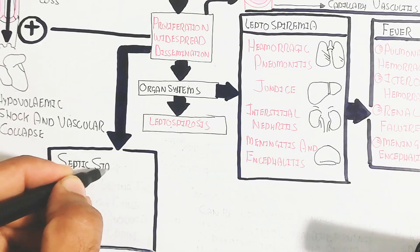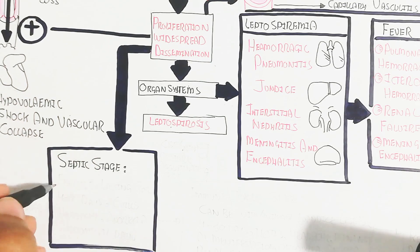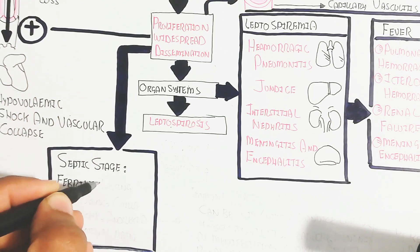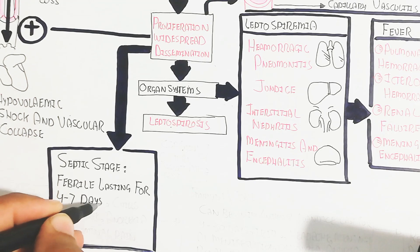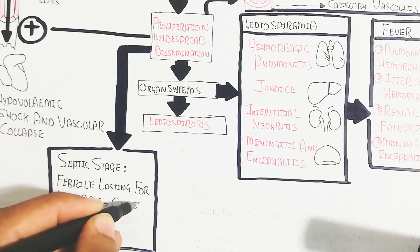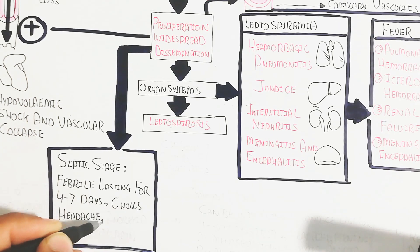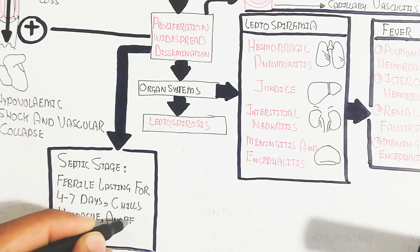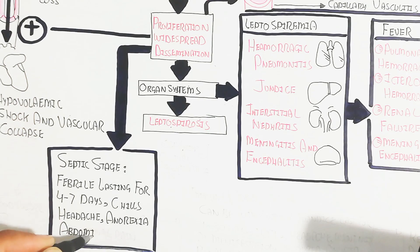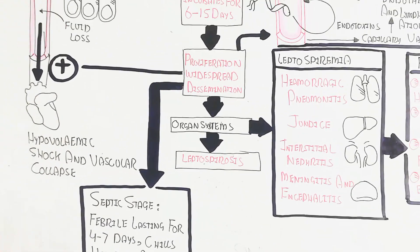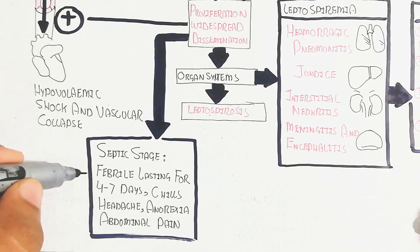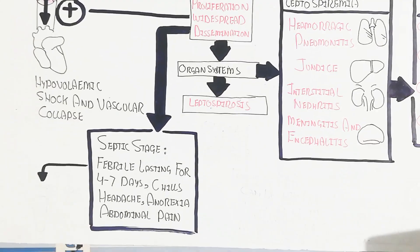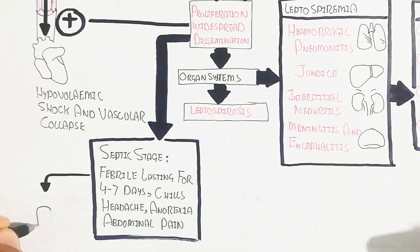The proliferation and wide-spread dissemination lead to the septic stage. In the septic stage, febrile illness lasts for four to seven days, with chills, headache, anorexia, and abdominal pain. This stage is diagnosed through blood culture.